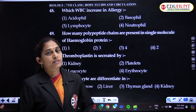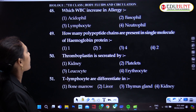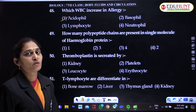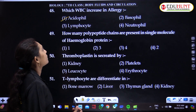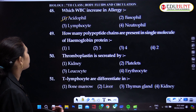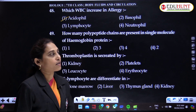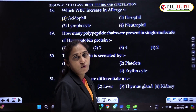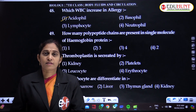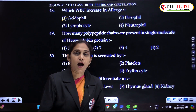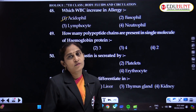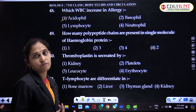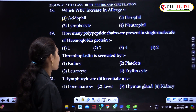Which WBC increases in allergy? Eosinophils — also called acidophils — increase during allergy; when allergy is present, eosinophils get activated and produce more. How many polypeptide chains are present in a single molecule of hemoglobin? There are four polypeptide chains — two alpha chains and two others, which may be beta, gamma, or delta, depending on the type of hemoglobin.